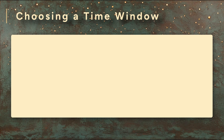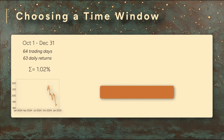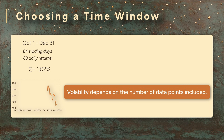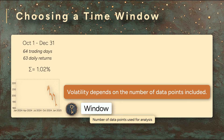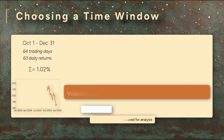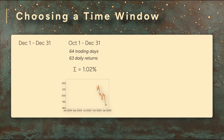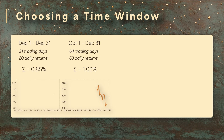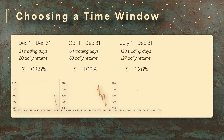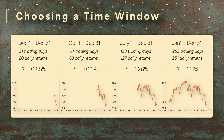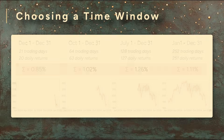Our volatility calculation was for the period October 1st through December 31st, 2024 — that's 64 trading days or 63 daily returns. But here's the thing: volatility depends on the number of data points you choose to include. We call this the window. To demonstrate, let's recalculate the volatility using several different windows: December 2024 (21 trading days), Q4 2024, the second half of the year (128 trading days), and the full 252 trading days in the year. Each window gives a different number for the volatility.